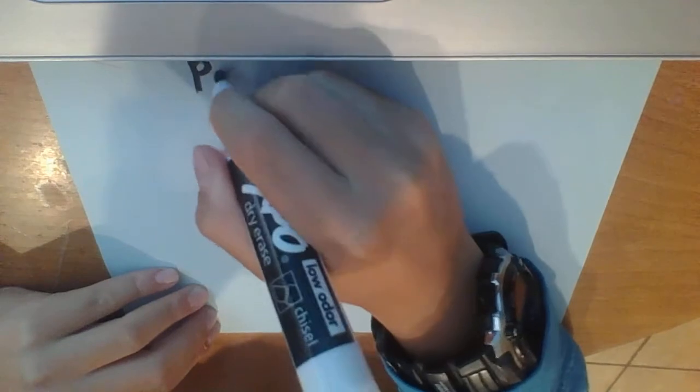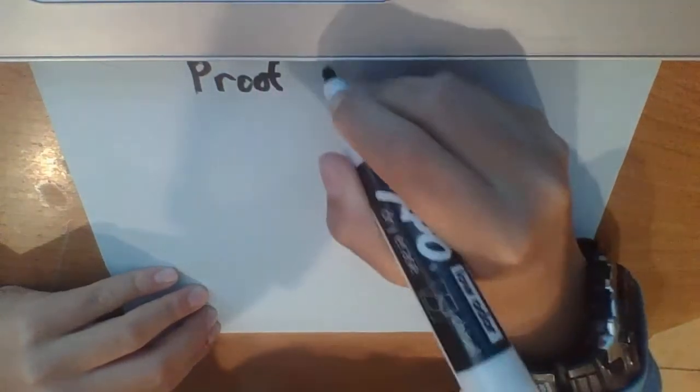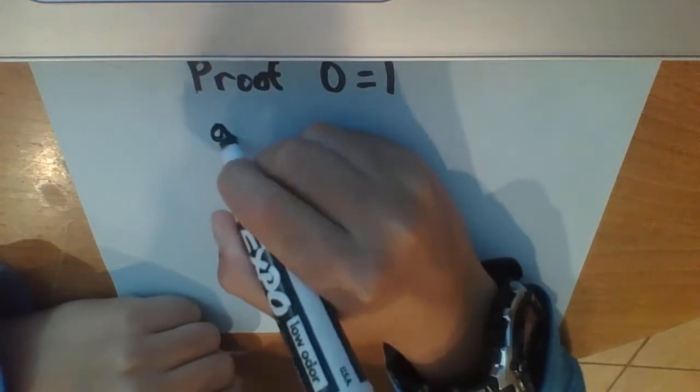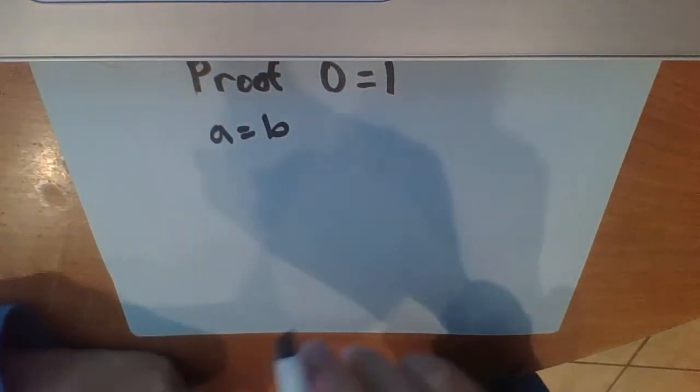Today I will prove that 0 equals 1. So let's start off and say a equals b. It can be any number.